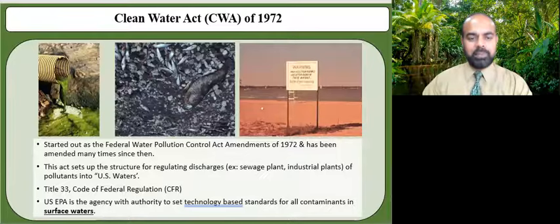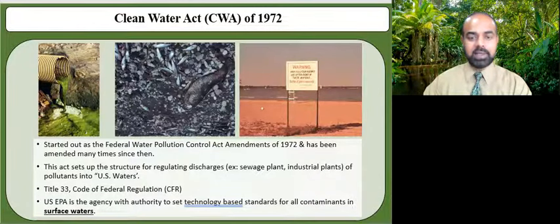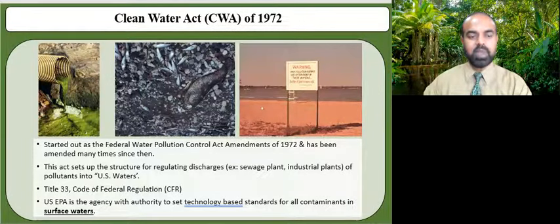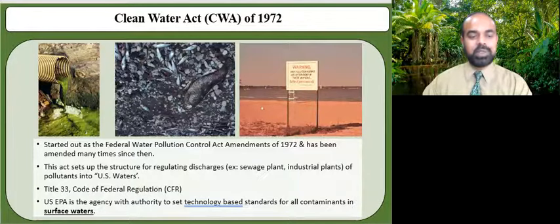The Clean Water Act, or CWA, establishes the basic structure for regulating discharges of pollutants into the waters of the United States and regulating quality standards for surface water. The key here is surface water — CWA applies only to surface water, such as rivers, lakes, estuaries, coastal waters, and wetlands. The law gave EPA the authority to set effluent technology-based standards and continued the requirements to set water quality standards for all contaminants in surface waters. The CWA makes it unlawful for any person to discharge any pollutant from a point source into navigable waters unless a permit is obtained under the Act.